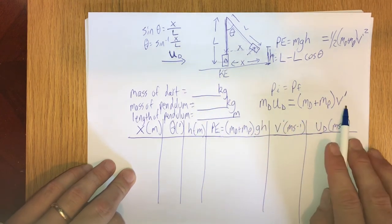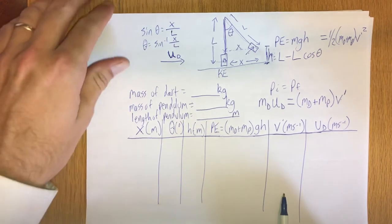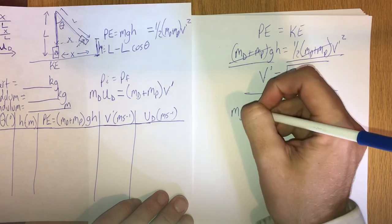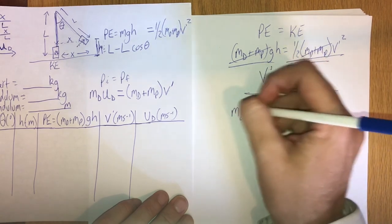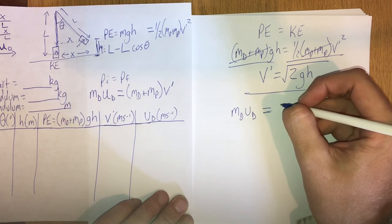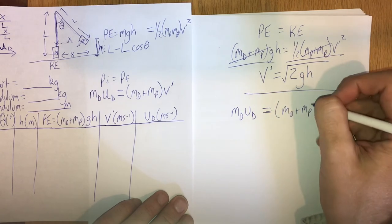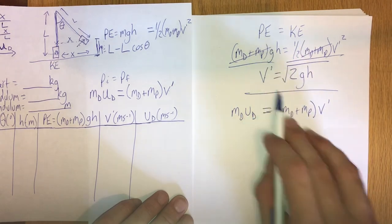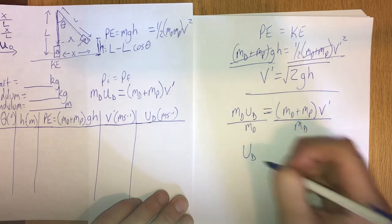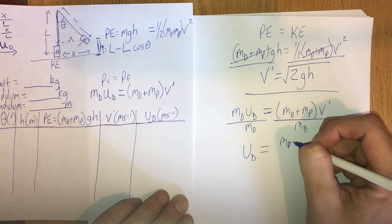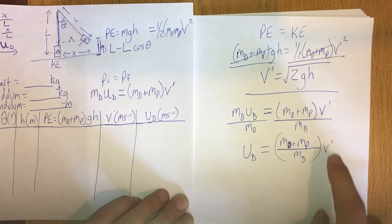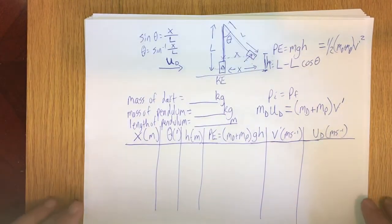Once we've calculated V prime, everything in the momentum equation is known except the initial velocity of the dart. Our final claim: the initial velocity of the dart equals (m_dart + m_pendulum) divided by m_dart, times V prime — where V prime is obtained from energy conservation. That is your claim: the initial velocity of the dart.